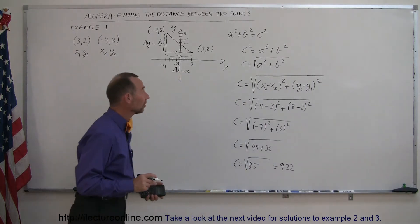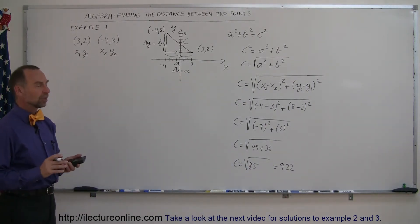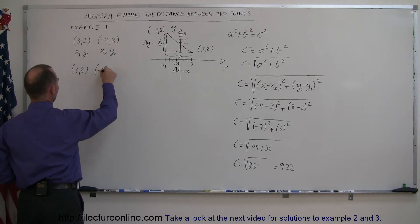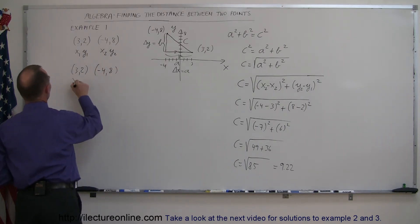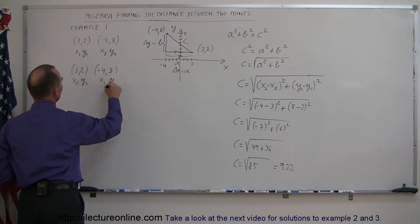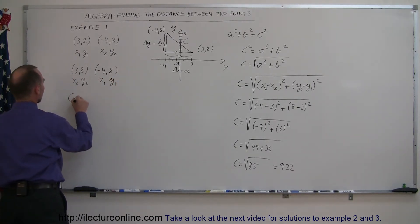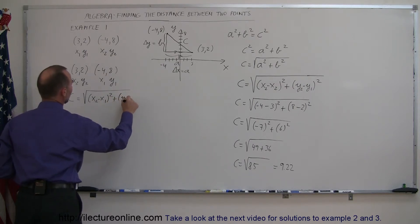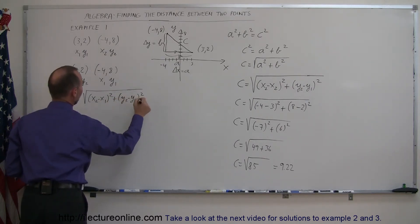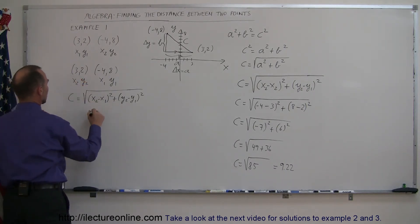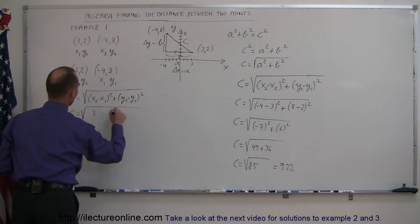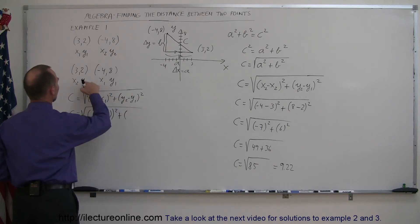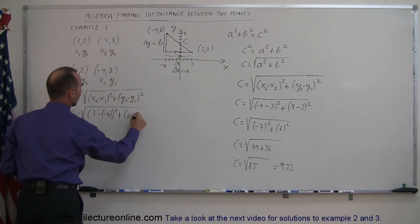Just to show it really doesn't matter which way you label the points: let's say we have the point (3, 2) and the point (minus 4, 8), but now label (3, 2) as x2, y2 and (minus 4, 8) as x1, y1. Using the distance formula again: C equals the square root of (x2 minus x1) squared plus (y2 minus y1) squared. Plugging in: x2 is 3, minus x1 which is minus 4, squared, plus y2 which is 2, minus y1 which is 8, squared.